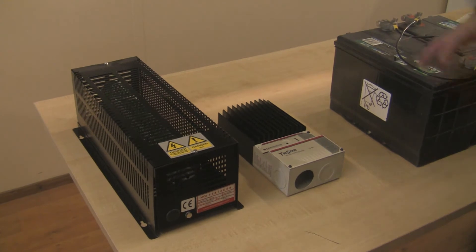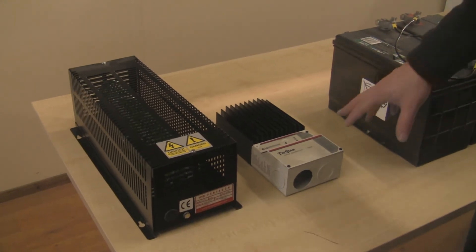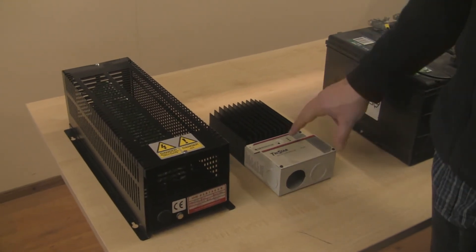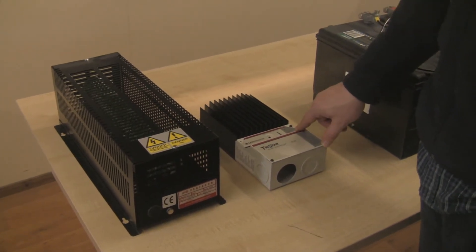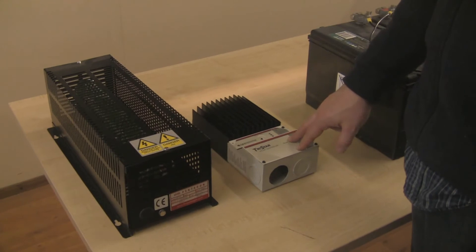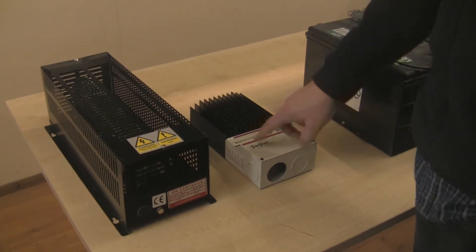The next thing we need to do is, before we connect any wires to the tri-star, we need to configure the tri-star. There's a number of dip switches inside which we need to set into different positions, so the first thing we need to do is remove the cover.